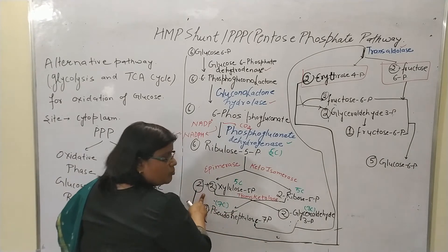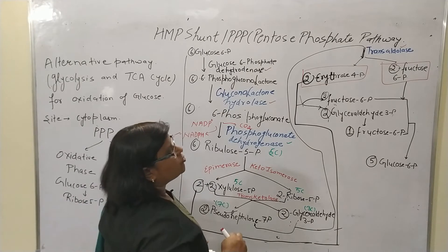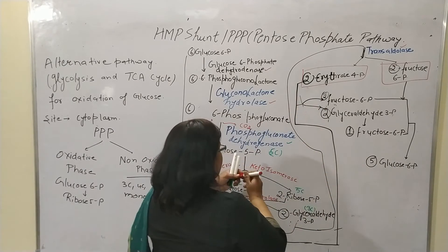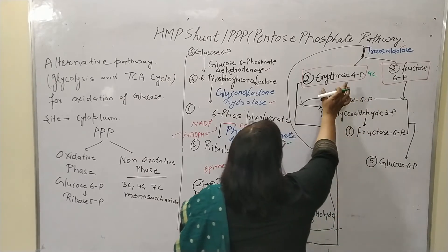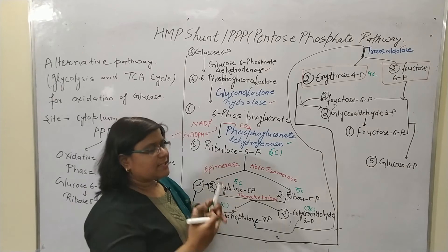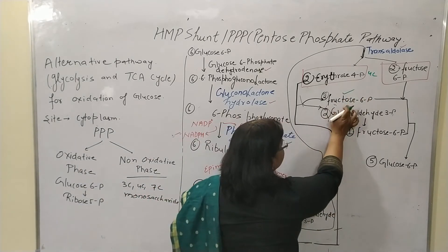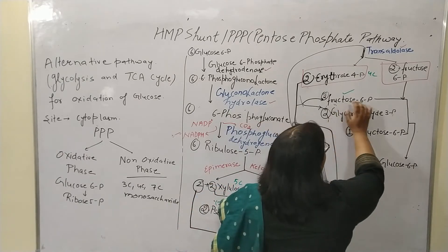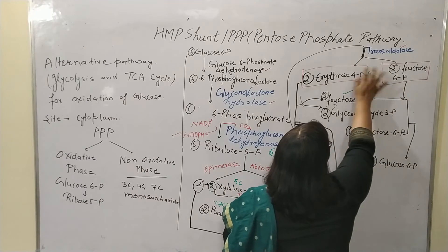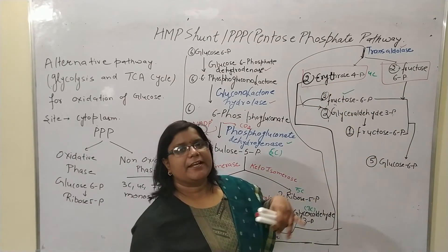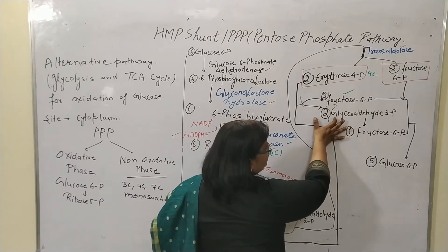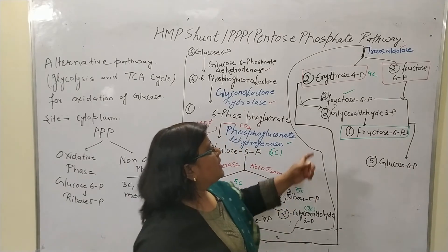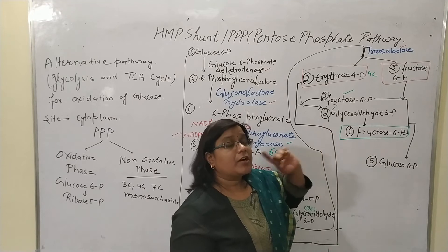The remaining 2 molecules of xylulose 5-phosphate are utilized with erythrose 4-phosphate. Erythrose 4-phosphate is a 4-carbon sugar, and erythrose 4-phosphate combined with xylulose 5-phosphate forms 2 molecules of fructose 6-phosphate and 2 molecules of glyceraldehyde 3-phosphate. Additionally, 2 molecules of glyceraldehyde 3-phosphate react together to form 1 molecule of fructose 6-phosphate.